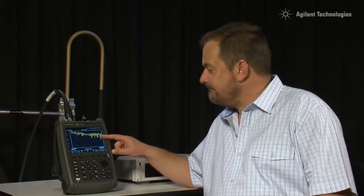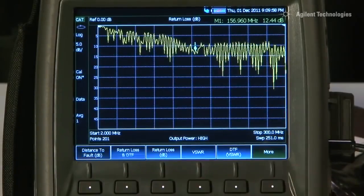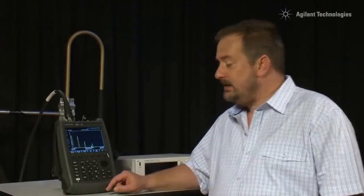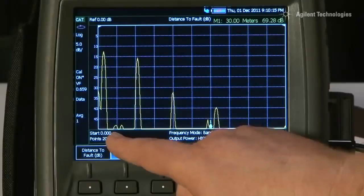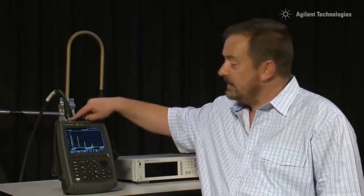So, within just a few seconds we can immediately tell there is a problem with the system. So let me press the Measure button again and now let's select Distance to Fault in dB for now.